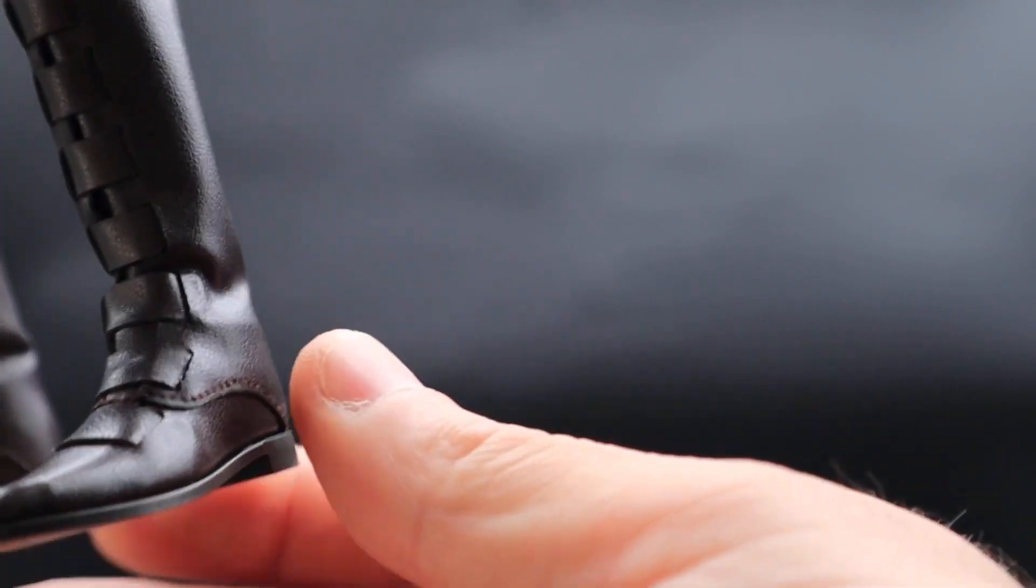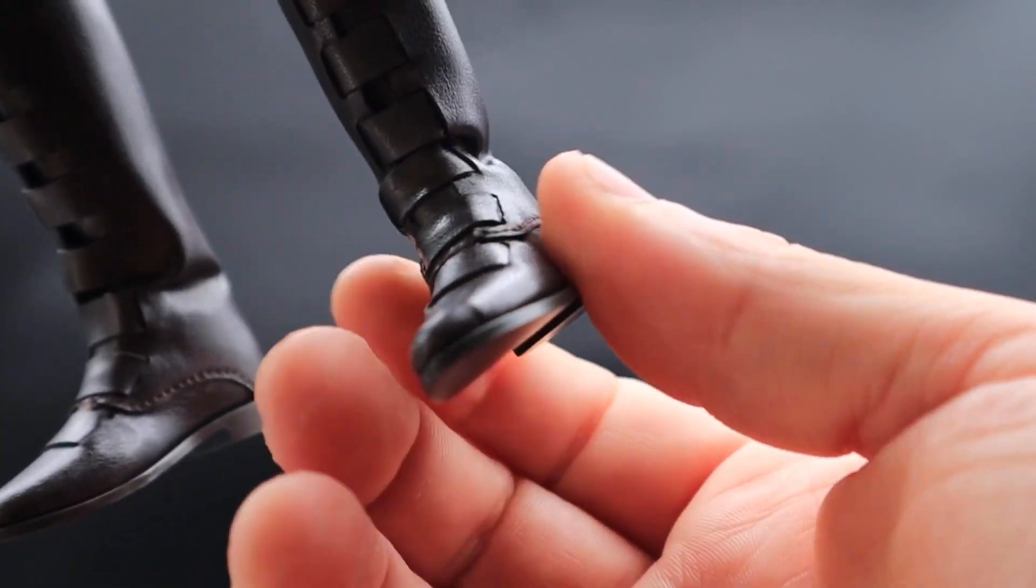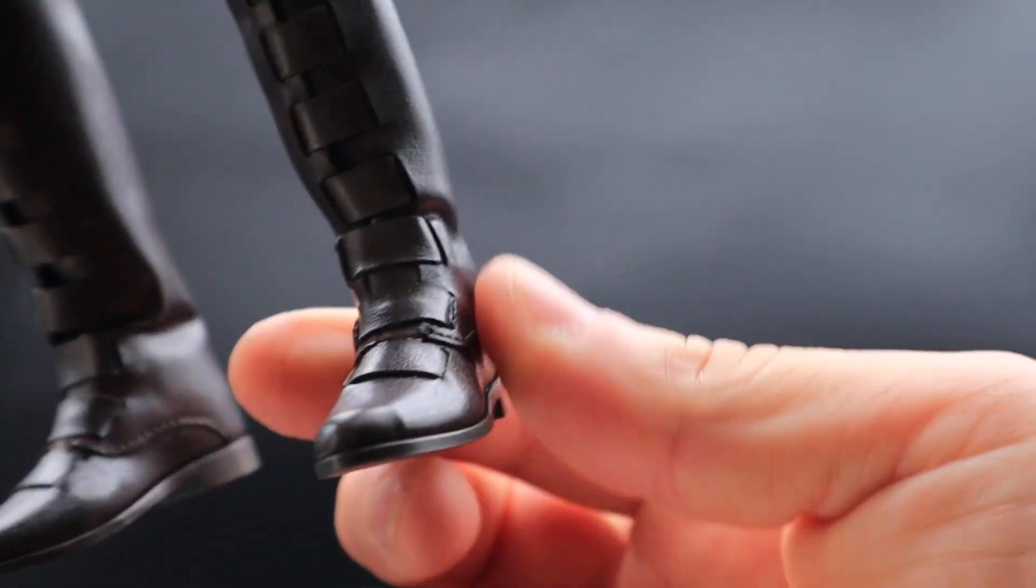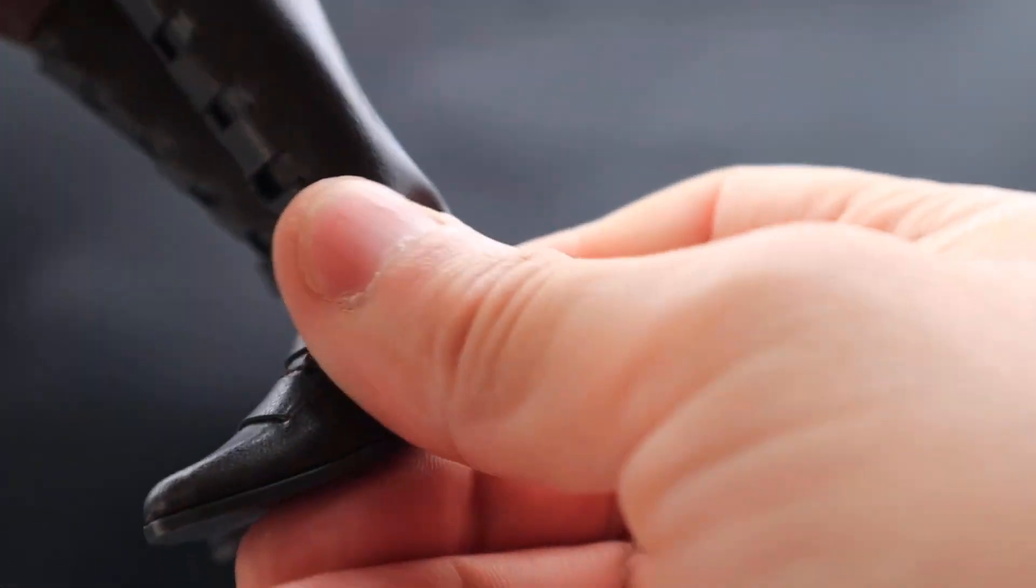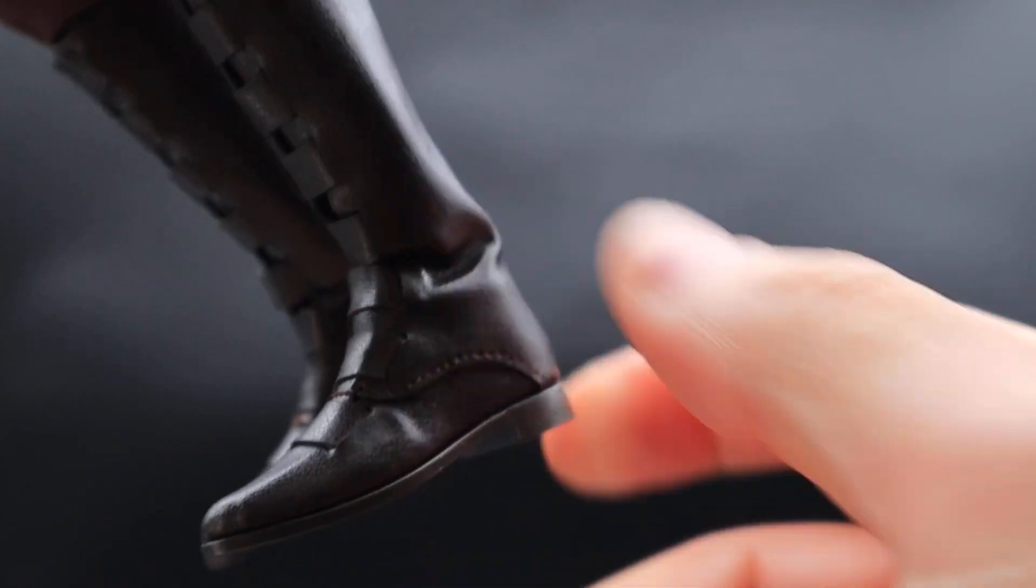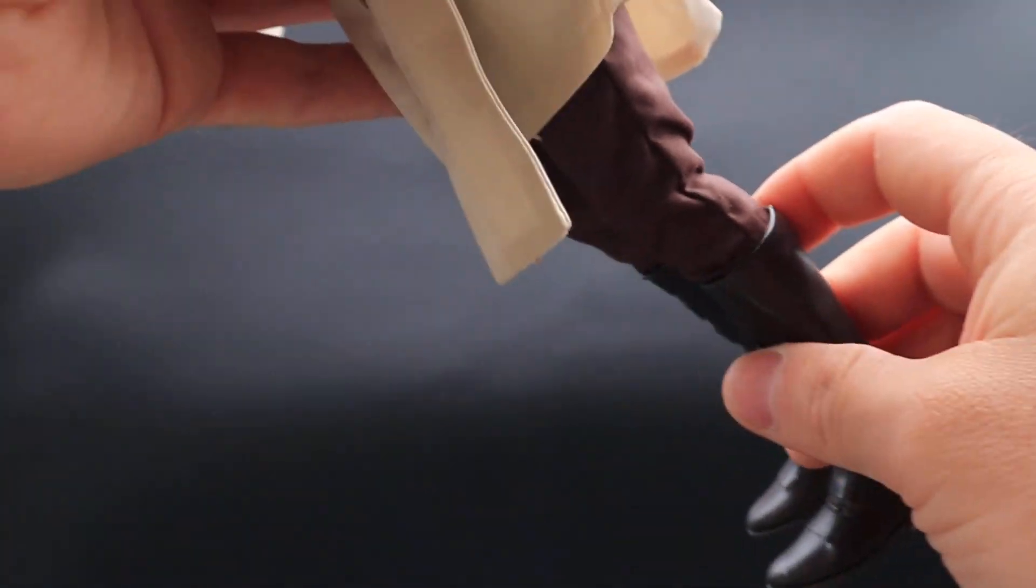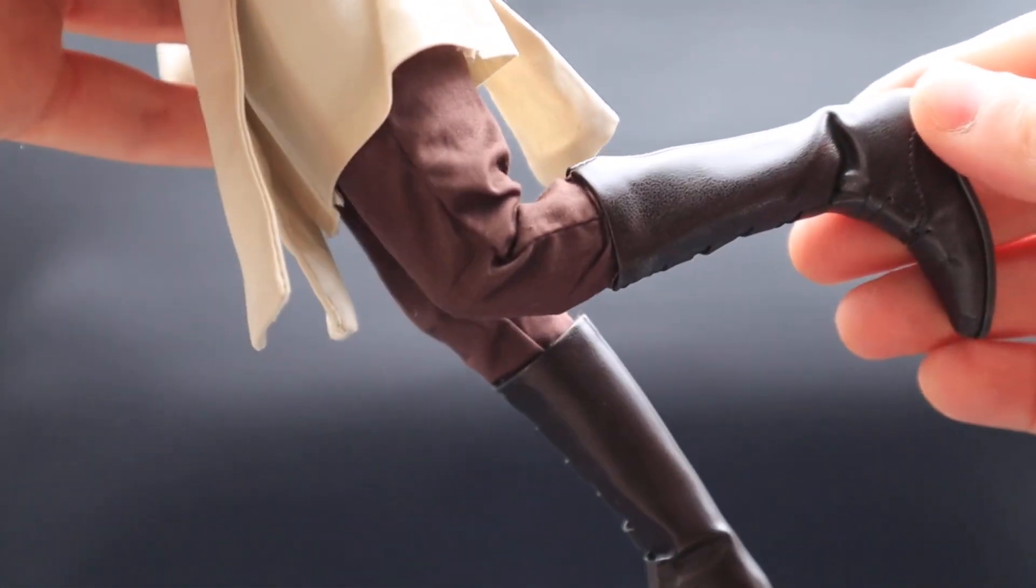So I'll show you now with the ankle - as you can see there, you can get a decent amount of movement there, especially because he's wearing a boot. A little bit back and forth. And then the knees do bend quite well.